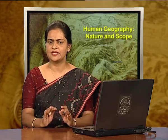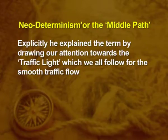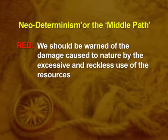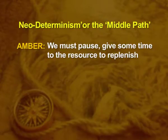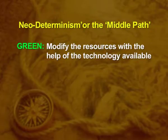Now we see another concept coined by Griffith Taylor — neodeterminism, or the middle path. He explained the term by drawing our attention to the traffic light. When we see the red signal, we stop and do not move until the light turns green — if we dare to do so it might be fatal. Red means we should be warned of damage caused to nature by excessive and reckless use of resources. Amber means we must pause and give time for the resource to replenish. Green means we may modify the resources with the help of available technology. We should not forget that nature has enormous potential for everybody's need — but not for anybody's greed.